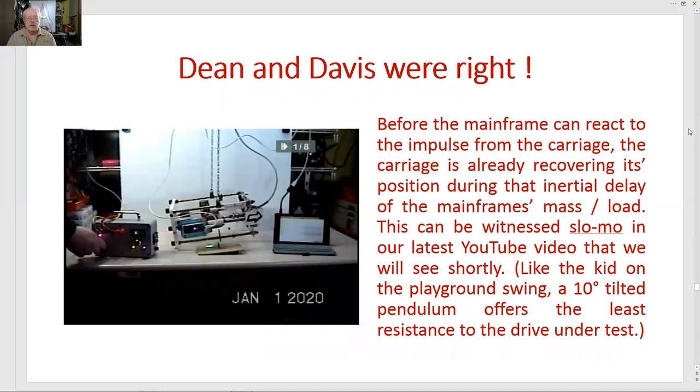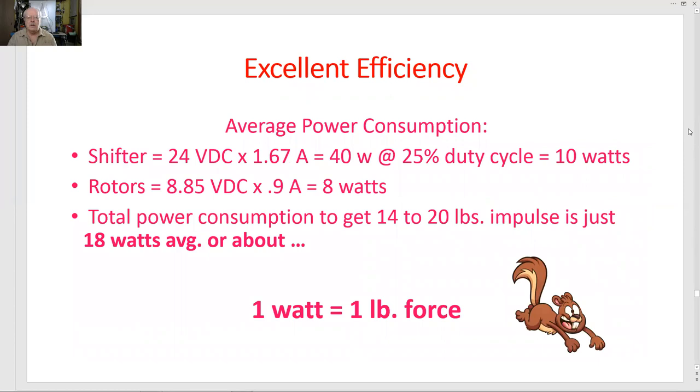Dean and Davis were right. Before the mainframe can react to the impulse from the carriage, the carriage is already recovering its position during that initial delay of the mainframe's mass load. This can be witnessed in slow-mo in our latest YouTube video that we will see shortly. Like the kid on the playground swing, a 10 degree tilted pendulum offers the least resistance to the drive under test.